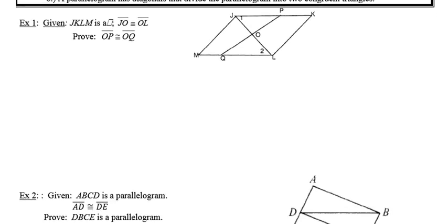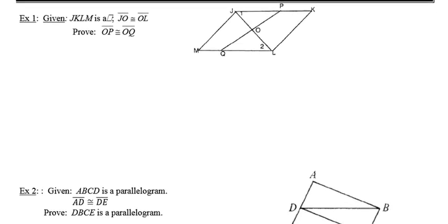In example one, we're given the fact that JKLM is a parallelogram. Since I don't really have a way to mark a parallelogram in my picture, I'm going to take my highlighter and highlight that figure. I could mark all the properties in the diagram, but that would make it very busy. The highlighter is my way of indicating that it's a parallelogram with all the properties that go along with it.